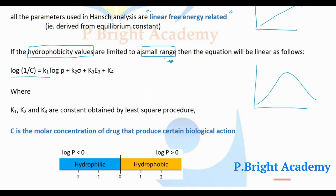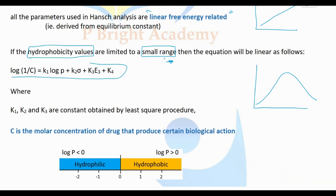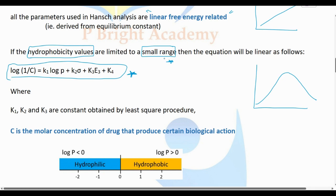We get a linear equation: log 1/C is equal to k1 log P plus k2 sigma plus k3 Es plus k4. This is the linear free energy equation. We get a straight line over a small, limited range.